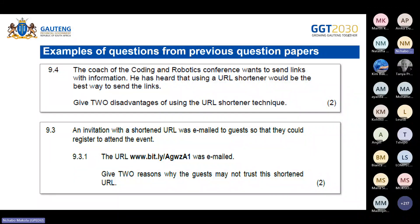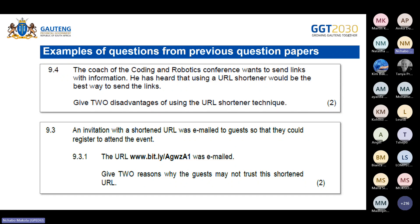I'm going to take you through one or two questions from previous question papers. This was a 9.4 question: the coach of the coding and robotics conference wants to send links with information and has heard that using a URL shortener would be the best way. You are asked to give two disadvantages of using the URL shortener technique. You would mention things like some websites stop short URLs from being posted, and some URLs have unique domain names which you are forced to use.